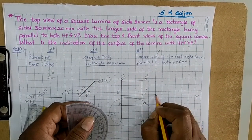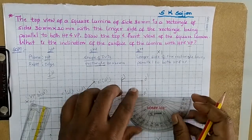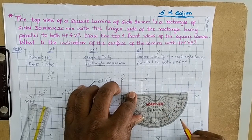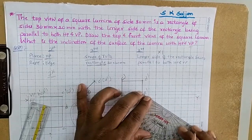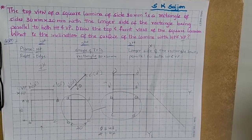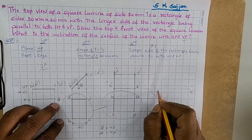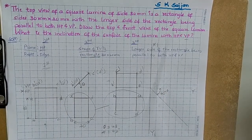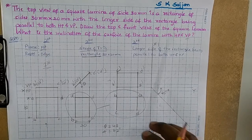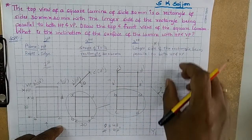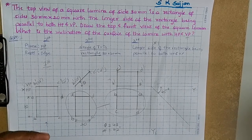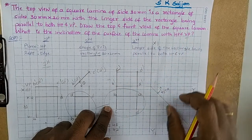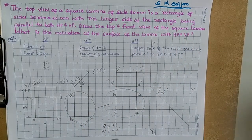This line is called X1-Y1. At the intersection of X1 and Y1, draw a 45-degree line. When the projections of the top view and the front view intersect — using the 45-degree line to transfer distances — we will obtain the required side view.